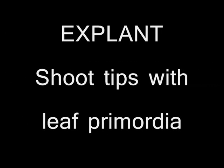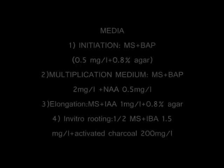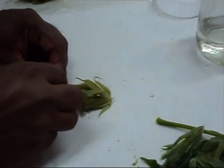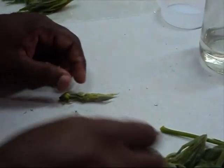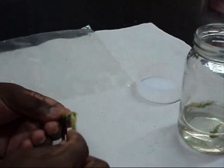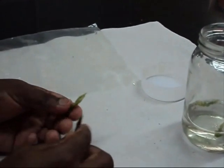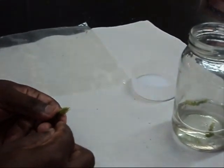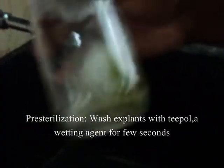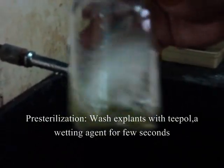This video is going to show you about the production of virus-free cassava plants through plant tissue culture. Pre-sterilization is done to remove the contaminants from the explants.